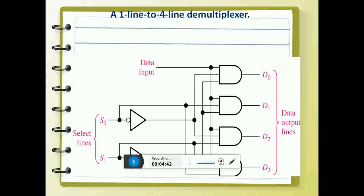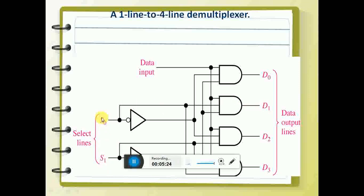Let us take the example of a 1-to-4 line demultiplexer. The data input here is only one. This input is available on any one of the outputs, determined by the select lines S1 and S0. If S1=0 and S0=0, it is available on D0. If S0=0 and S1=1 (0,1), it is available on D1. 1,0 puts it on D2, and 1,1 puts it on D3.